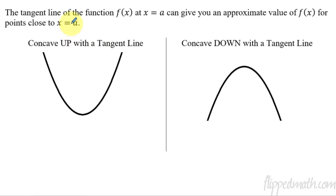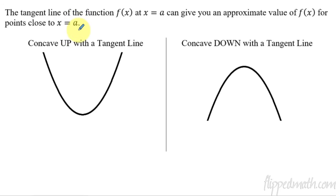First off, I have a statement that the tangent line of a function f of x at some x equals a — whatever it is, we can make any number up we want — can give you an approximate value of f of x, as long as you're looking at points that are close to a. When we get done with the lesson, if you go back and reread this first line, I think it'll make a lot more sense.